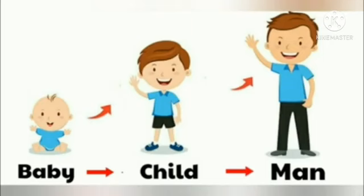Living things grow and change their shape and size as they get older. For example, a baby grows into a child and then becomes an adult man.